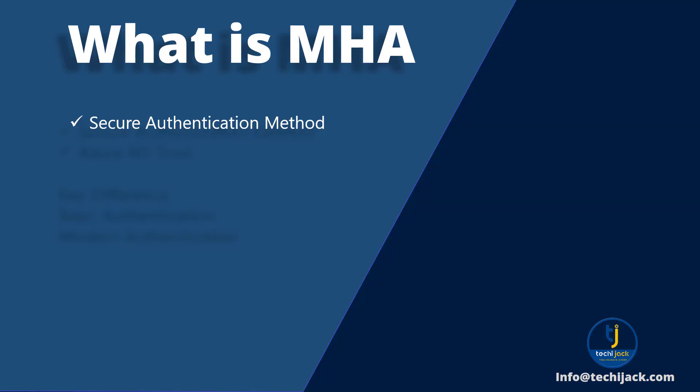It is a secure authentication method using OAuth 2.0 tokens instead of username and password. It allows Exchange on-premises server 2016, 2019, or 2025 to trust Azure AD for authentication. Once it is enabled, users can access on-premises mailboxes using Outlook, Outlook Mobile, and Outlook on the Web with the same modern authentication experience as Microsoft 365 users.